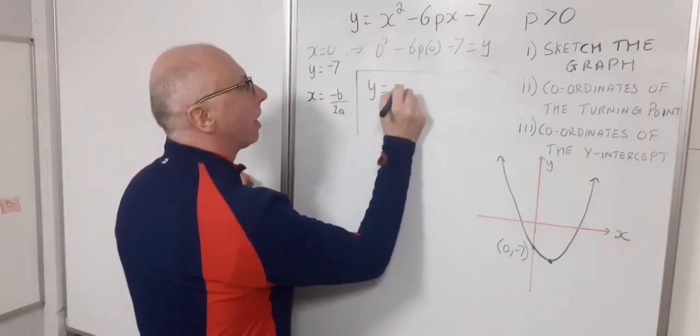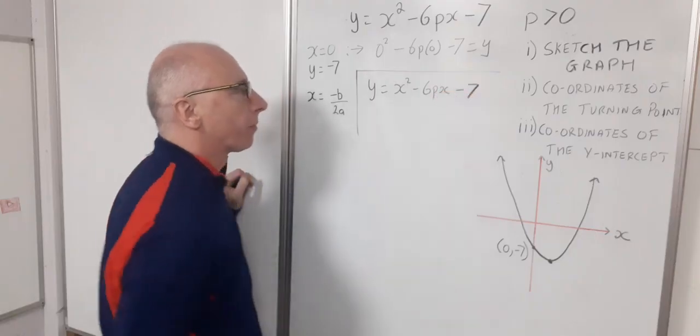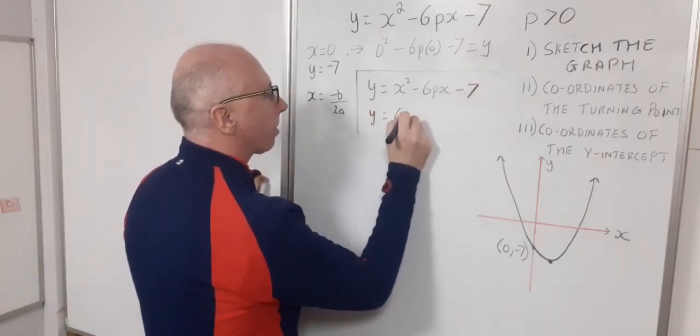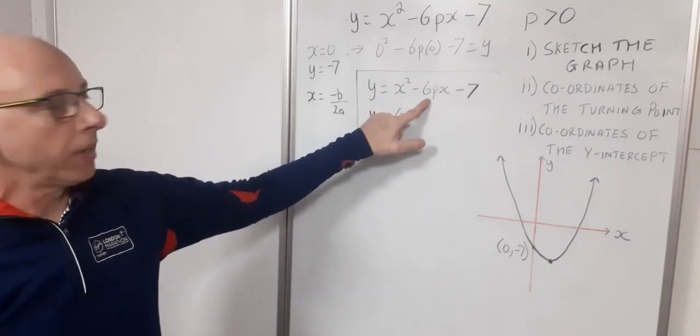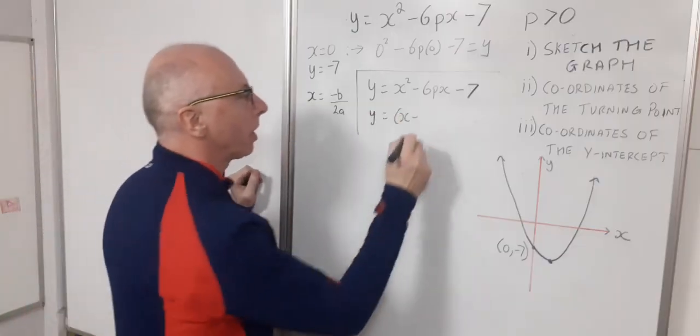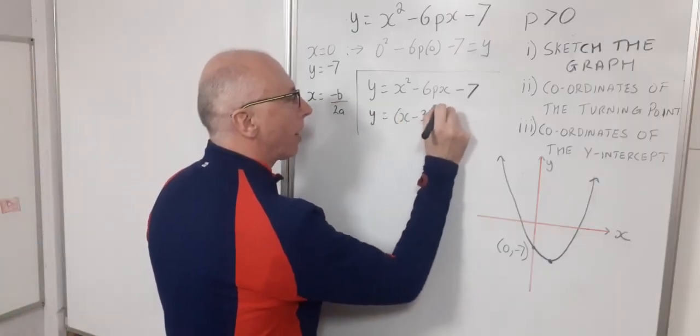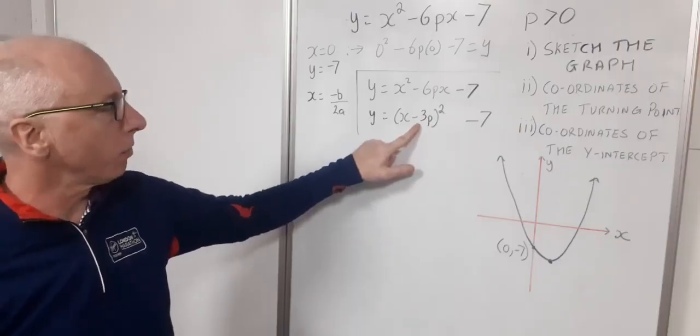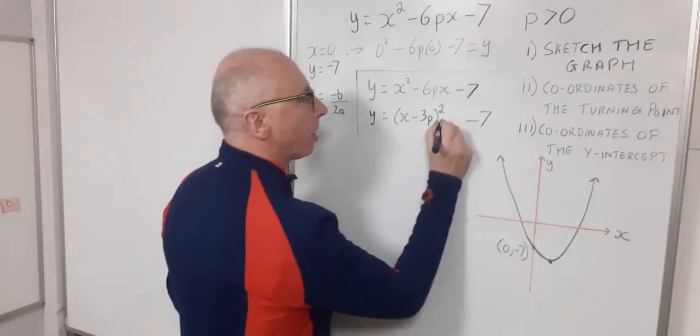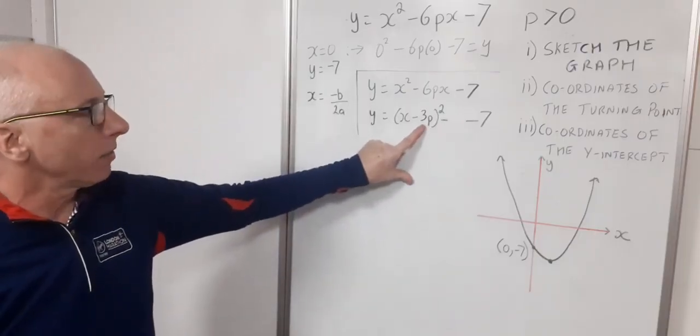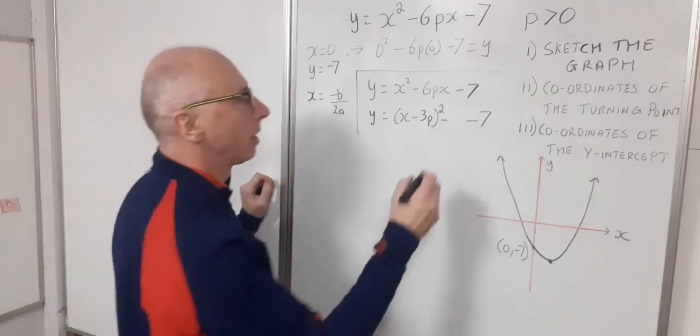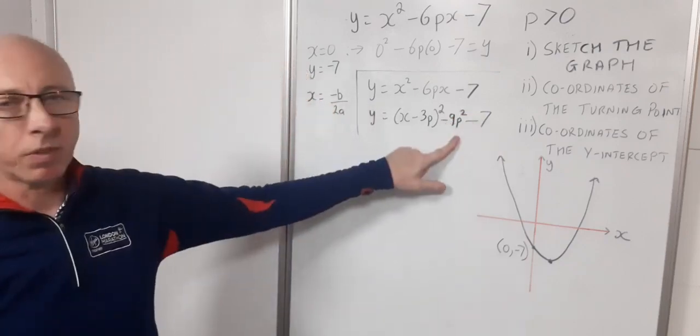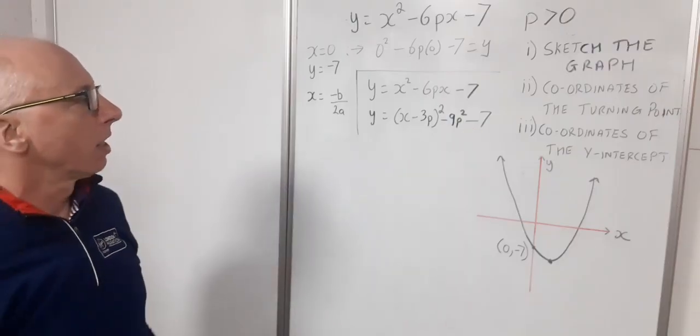So let's rewrite it. x squared minus 6px minus 7. So taking the square, we write this as a single indice. So we get y equals x minus, now we've got to take half of this. So we've got minus 6p divided by 2 is minus 3p. So 3p. And then we square that. We keep the minus 7. And now we need to put another number in here just to correct things. Because if we square this, we will have gained another term. So we need to subtract something. That is going to give us when this is square. So minus 3p squared. So minus 3p squared gives us 9p squared. So that's what we've got there. So minus 9p squared minus 7. So that's taking the square.